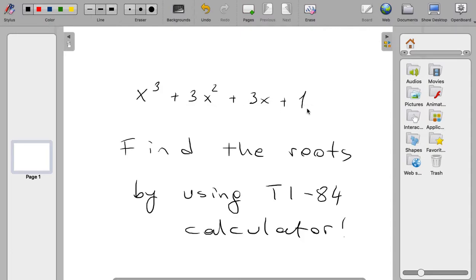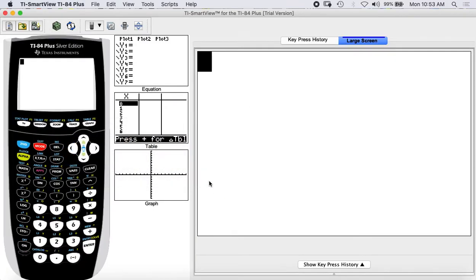x cubed plus 3x squared plus 3x plus 1 is our polynomial. Find the roots of this polynomial by using a TI-84 calculator. To do this, we are taking our calculator and then we click the application. When we click the application, this menu comes out.